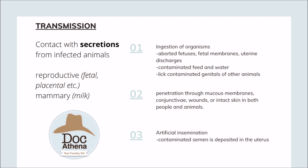Another route is penetration through mucous membranes, conjunctiva, wounds, or even intact skin in both people and animals. For example, if a bucket of water was licked by a Brucella-positive animal and you washed your hands with that contaminated water, you could become infected because Brucella can penetrate through intact skin.